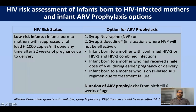A low-risk infant is one born to a mother whose viral load is suppressed — less than 1,000 copies per mL on viral load testing between 32–36 weeks of gestation — and who is adherent to ART. For low-risk infants, single-drug prophylaxis with nevirapine is given.